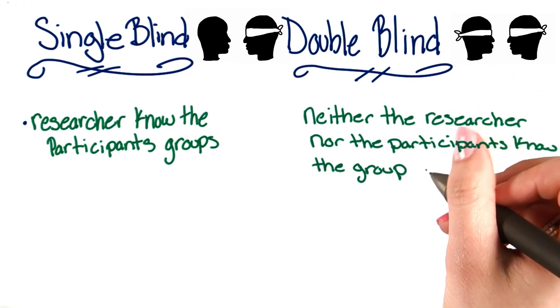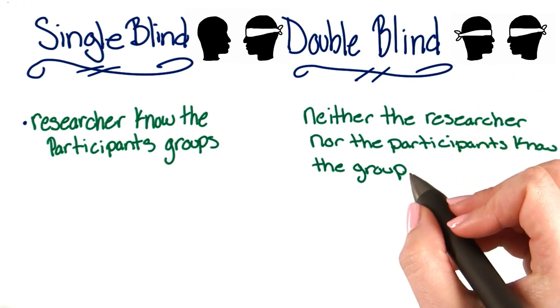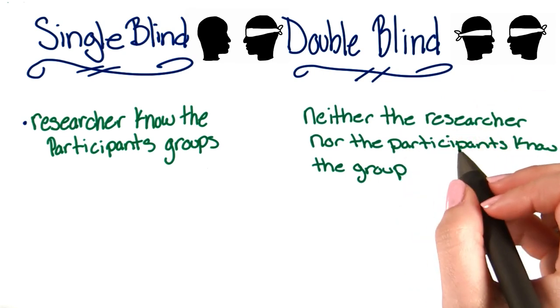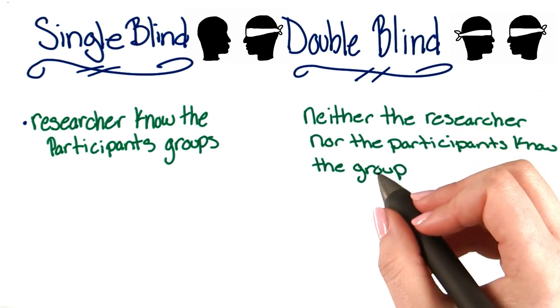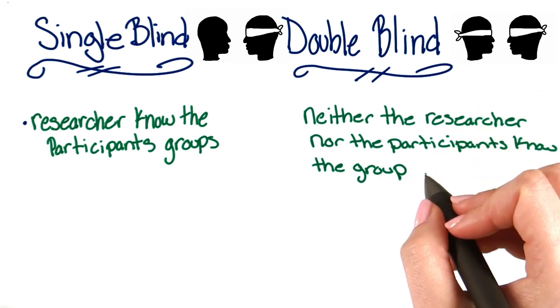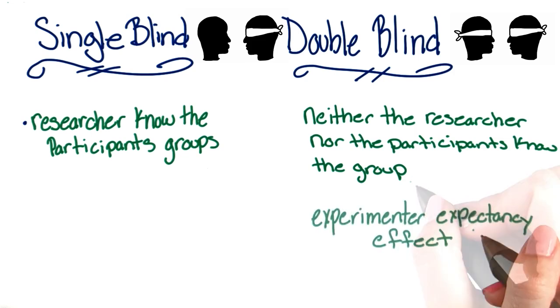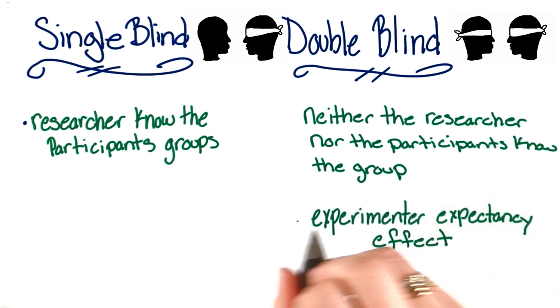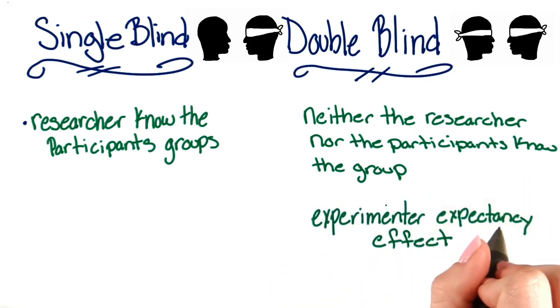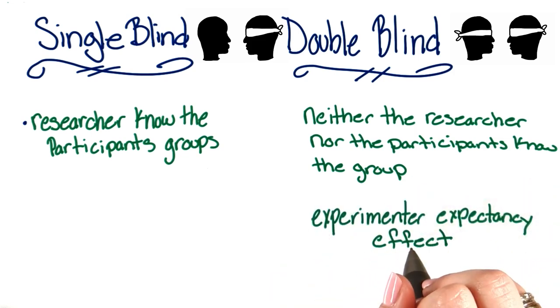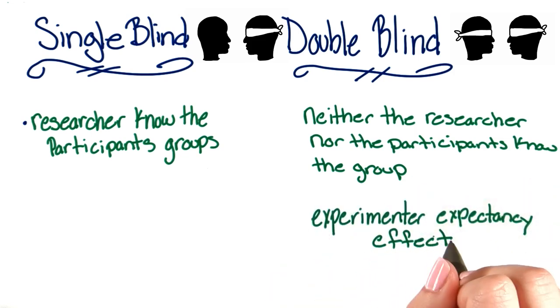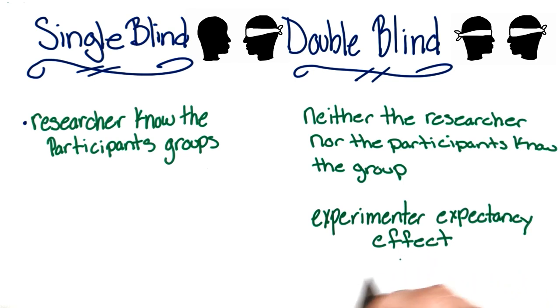In a double blind study, neither the researcher nor the participants know what group they're in. This will further reduce bias by controlling for experimenter expectancy effect.